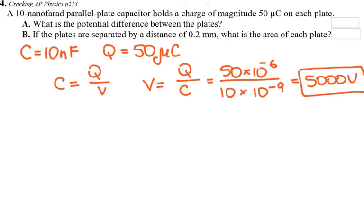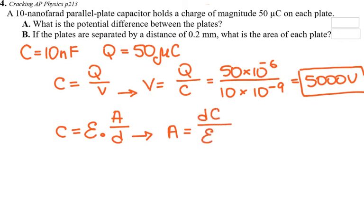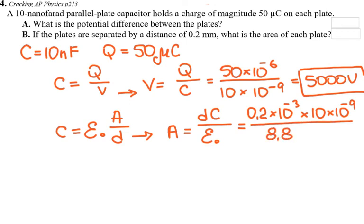They also ask: if the plates are separated by 0.2 millimeters, what is the area of each plate? From C = ε₀A/d, the area equals distance times capacitance divided by permittivity. So: 0.2 × 10⁻³ times 10 × 10⁻⁹ divided by 8.85 × 10⁻¹², giving an area of approximately 0.23 meters squared.